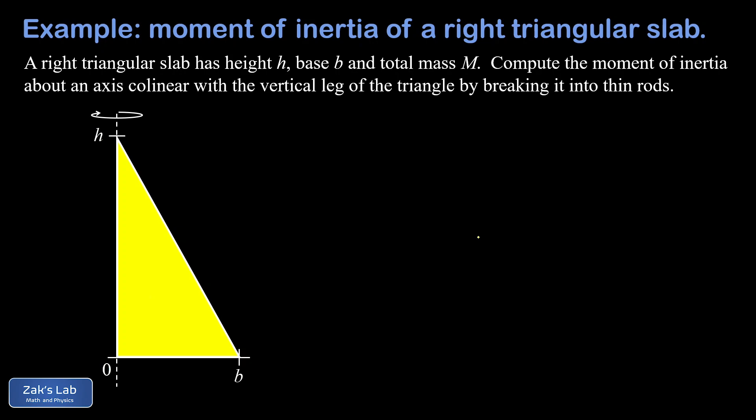We're asked to compute the moment of inertia by breaking it into thin rods. There are actually two ways to do this - we could use horizontal thin rods or vertical thin rods, and in this video we're going to do it by slicing this slab into horizontal rods.